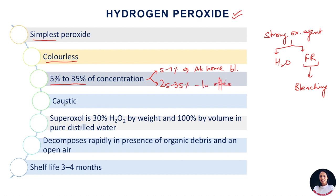Hydrogen peroxide is very caustic in nature, so it can cause chemical burns, and one should be very careful while using it. It is most commonly used as Superoxol. Superoxol is 30% hydrogen peroxide by weight and 100% by volume in pure distilled water. Note these values — 30% hydrogen peroxide by weight and 100% by volume in pure distilled water — as it is a very commonly asked question in entrance exams.